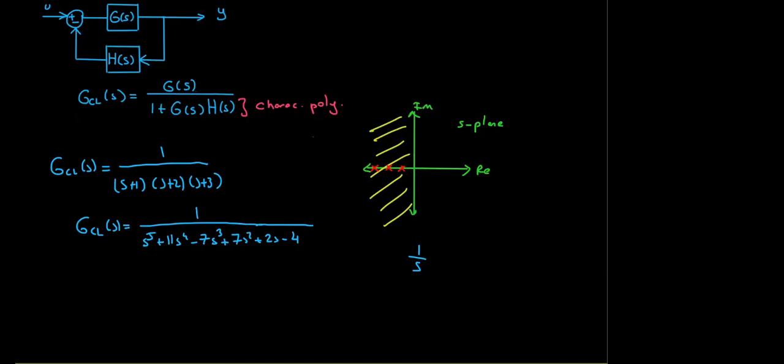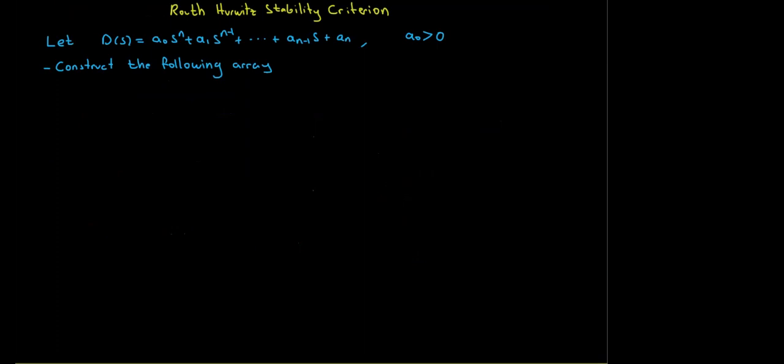Let's continue with the Routh method. We are given a denominator D(s) = a₀sⁿ + a₁sⁿ⁻¹ + ... + aₙ, and we want to find whether the roots stay in the open left half plane without finding the pole locations. In the Routh-Hurwitz method we do that by constructing an array.